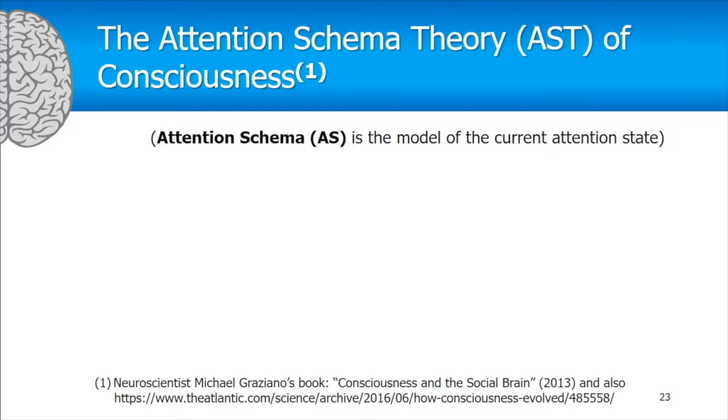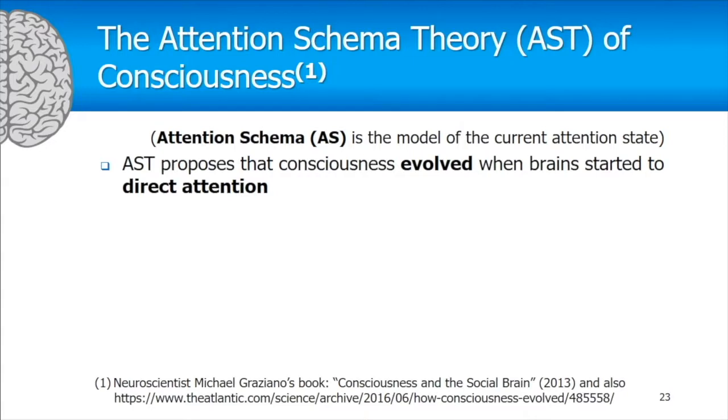Graziano proposes that consciousness evolved when brains started to direct attention. Before the brain started to direct attention to one object or another, all animals that existed in that state were not conscious. Animals that can direct attention to one place or another are conscious animals, according to his theory. The example is the hydra — a primitive water animal that does the same contraction response wherever you touch it, rather than directing its body away from the specific spot.